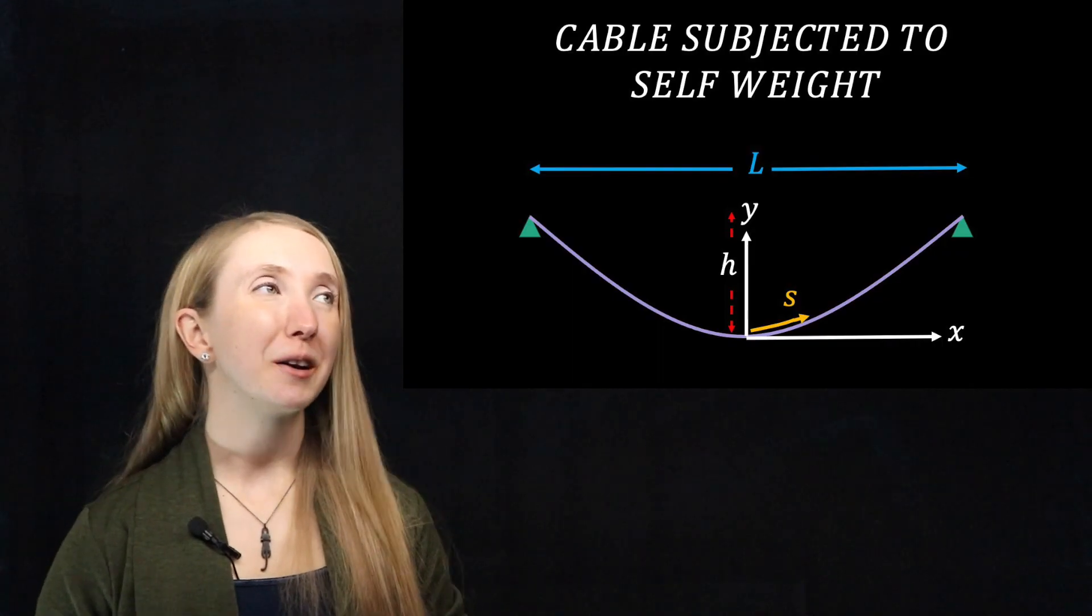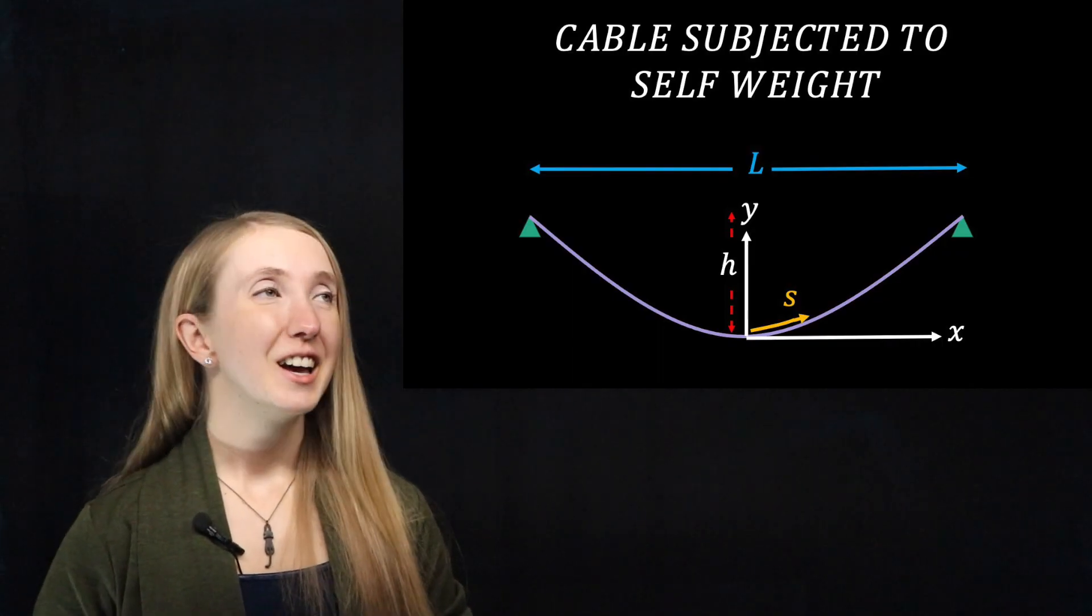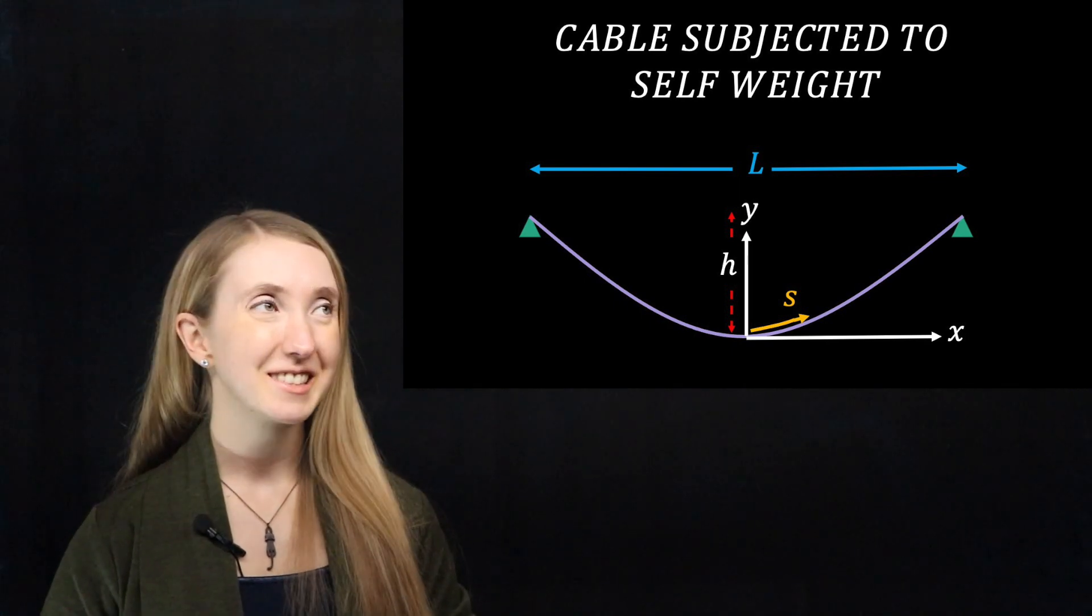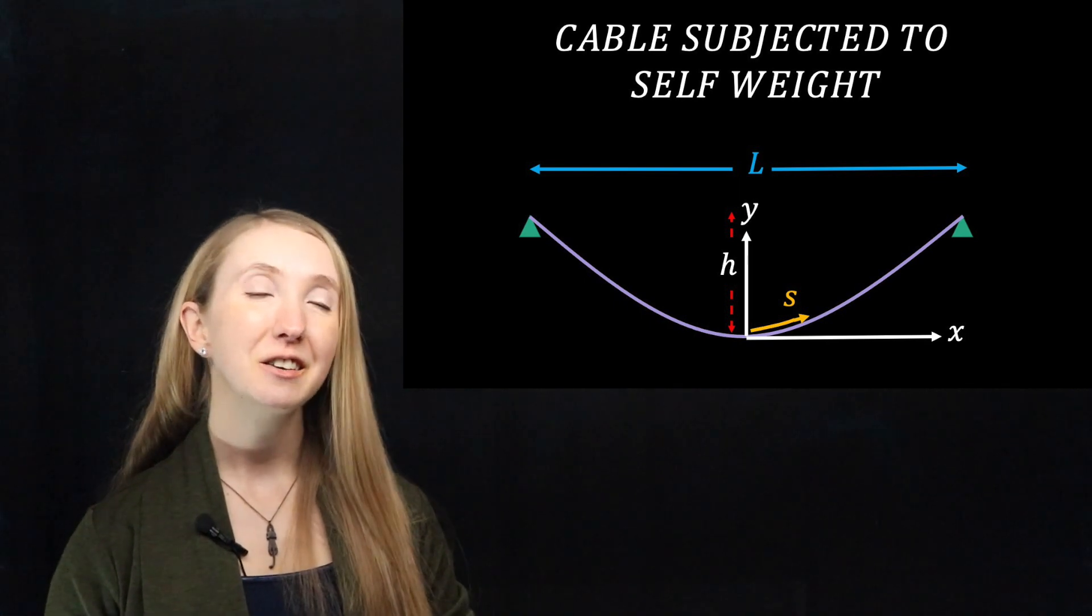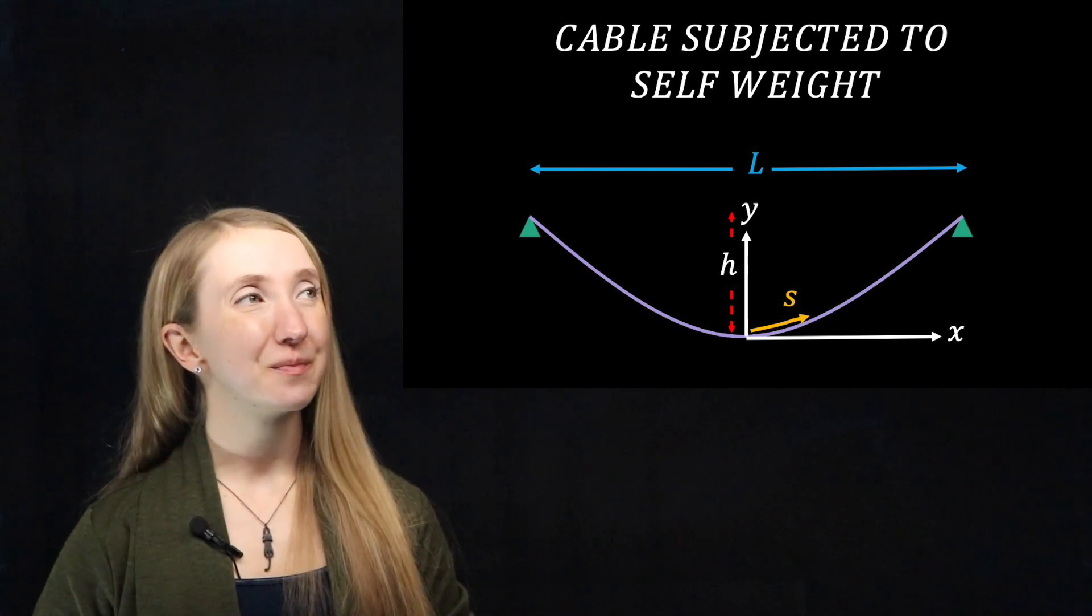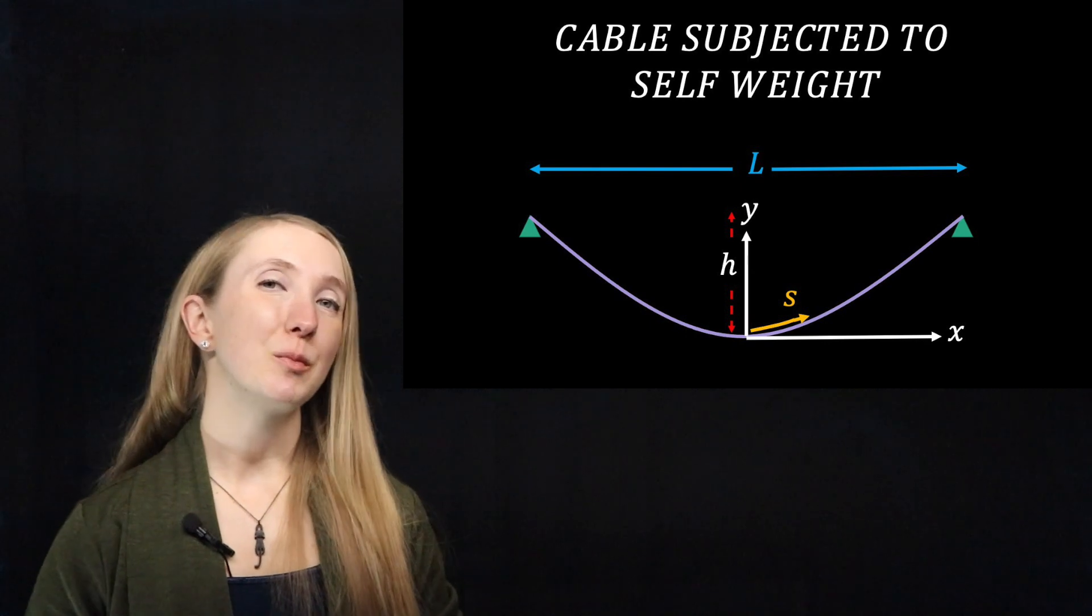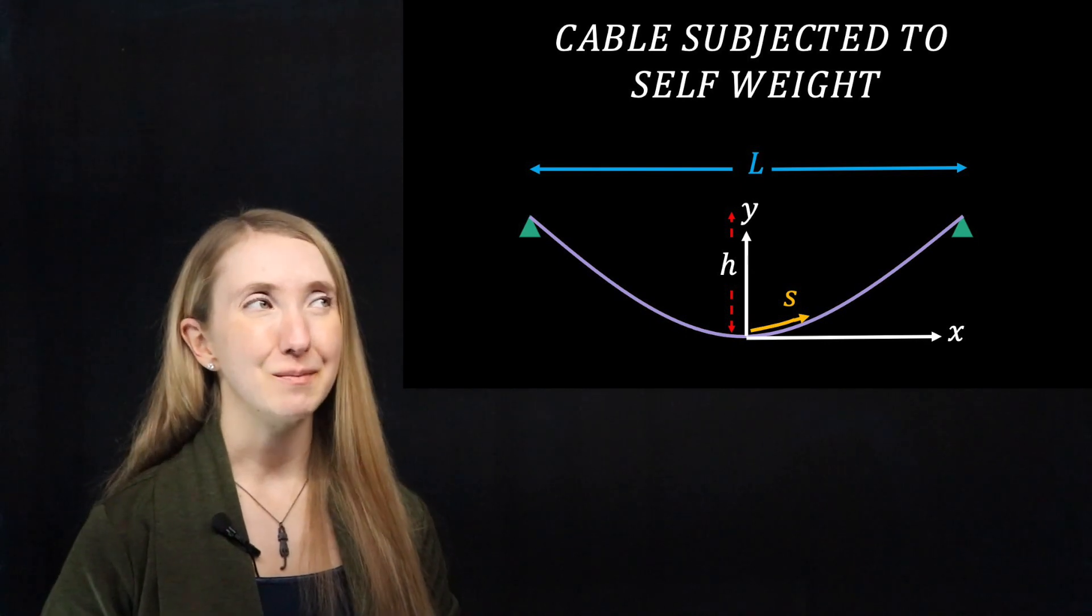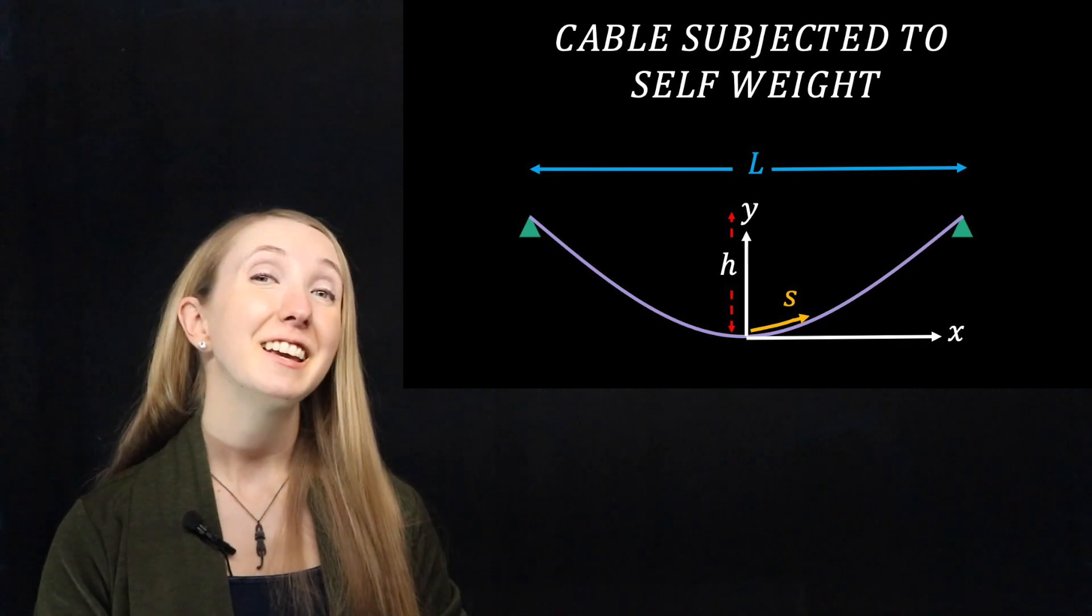Our equations come from our classic base case, a uniform, symmetric cable suspended by two points. We put the origin of our system at the center, where the slope of our cable is zero. The shape this cable makes, hanging under its own self-weight, has a special name. It's called a catenary.